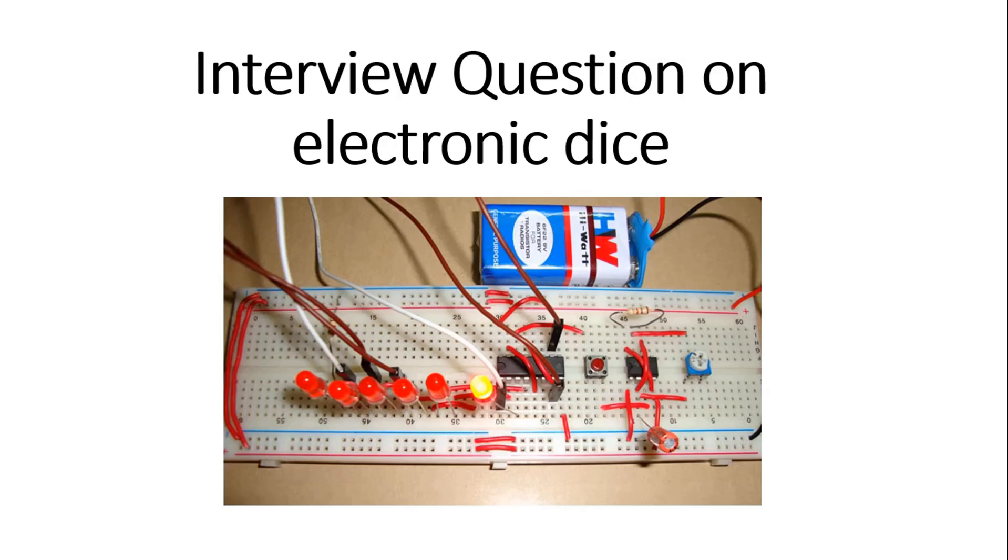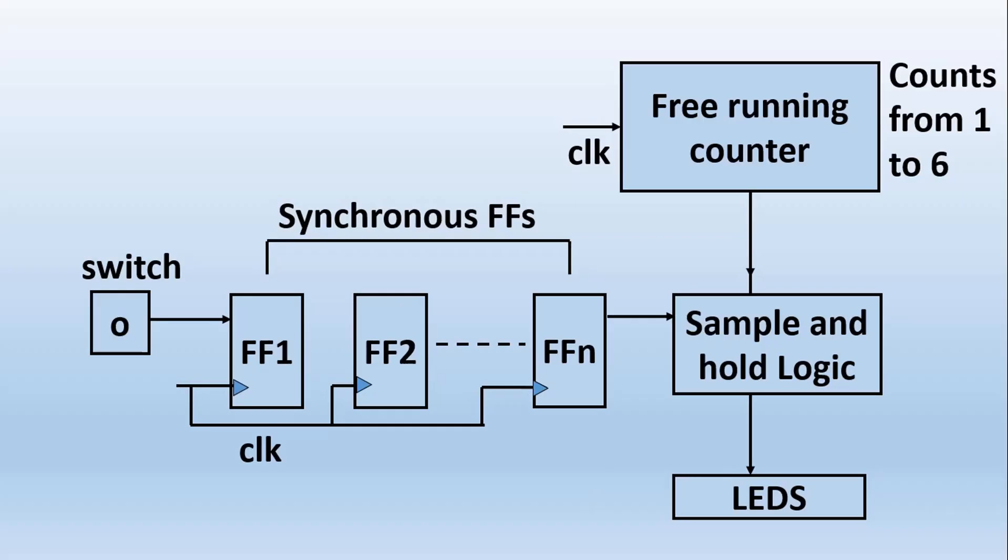Friends, now without wasting much time, let me reveal its answer. This will be the digital design to implement an electronic dice. As I told you, we have to generate a random number. To generate a random number, I am taking a free-running counter which is counting from one to six continuously. There is a button, and as soon as I press this button, I have to put some synchronizer flip-flops to make it synchronized with the clock that I am using in my design.